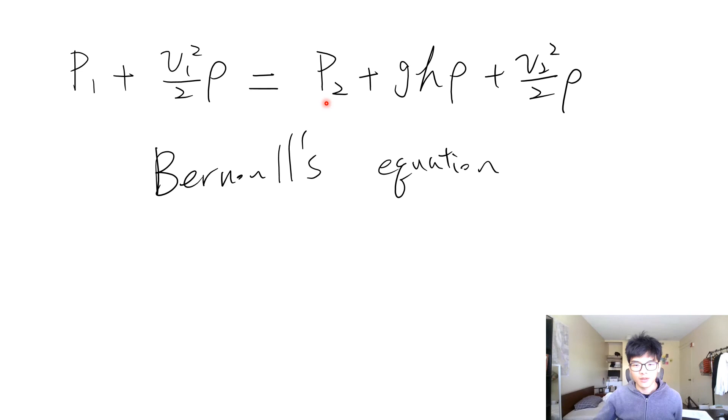So assuming that the place labeled with subscript two is a place which is higher than the place at one, then the pressure at one plus the speed of flow at one squared divided by two times the density of the fluid equals the pressure at two plus the height difference times the gravitational constant times the density of the fluid.